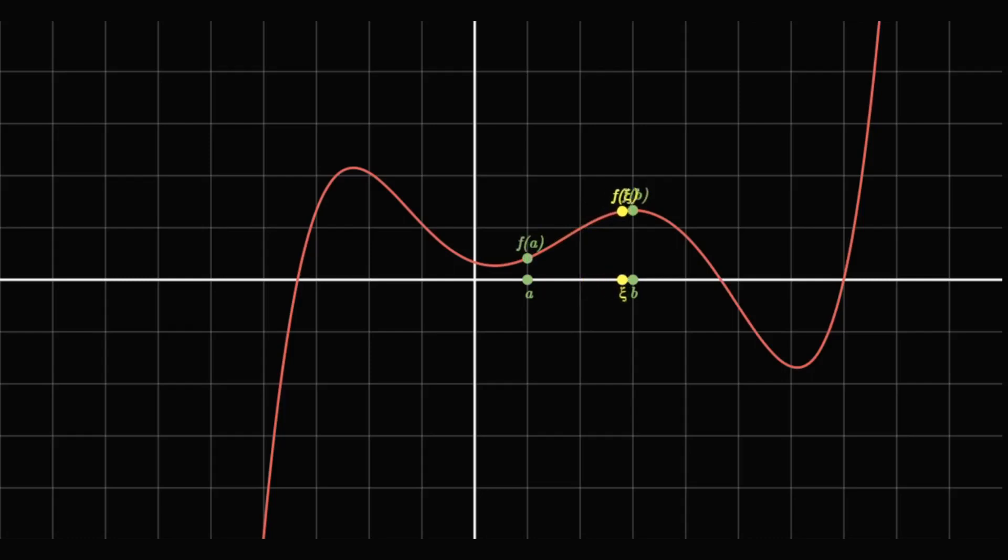In simpler terms, f can take on any value between f and f. This theorem can be used to find the roots or zeros of a function. Let's say we have some interval that our function is defined on. If the interval's endpoints have opposite signs,